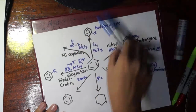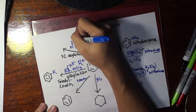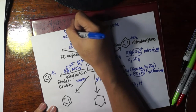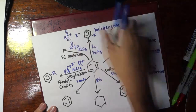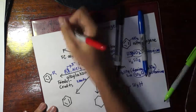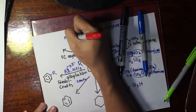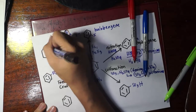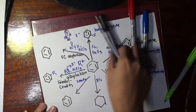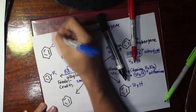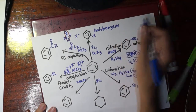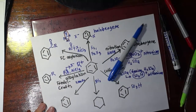If the R group to be attached is an acyl group — meaning the carbon directly attached to X is a carbonyl carbon — the reaction is called Friedel-Crafts acylation. When the acyl halide is cleaved, it produces X negative and an acylium ion (RCO+). The carbonyl carbon bonds directly to the ring first, followed by the R group.